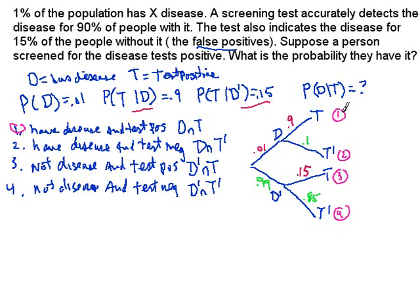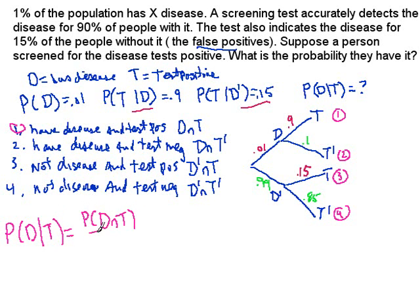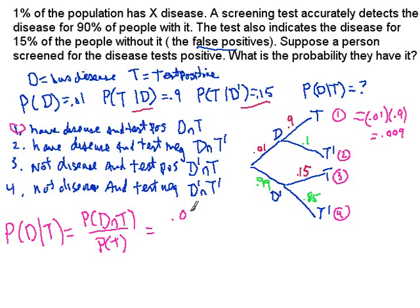Now let's look at what we're actually trying to find. We want to find the probability that a person has the disease given they test positive, P(D|T). By the definition of conditional probability, that's the joint probability P(D and T) divided by P(T). We know how to find the numerator — it's the product along the top branch: 0.01 times 0.9, which equals 0.009.